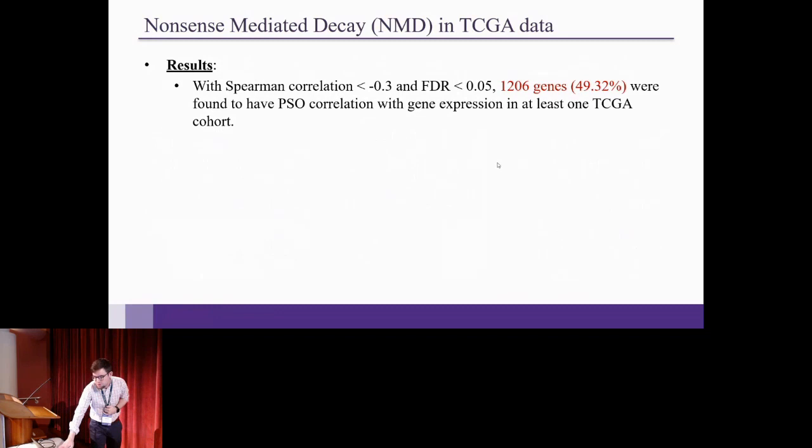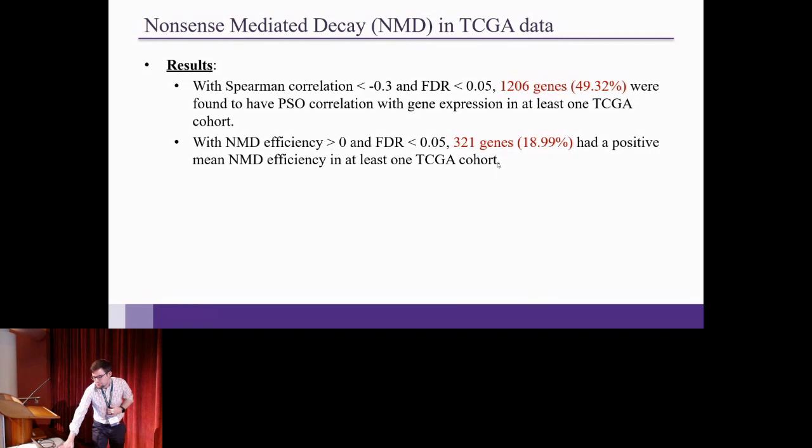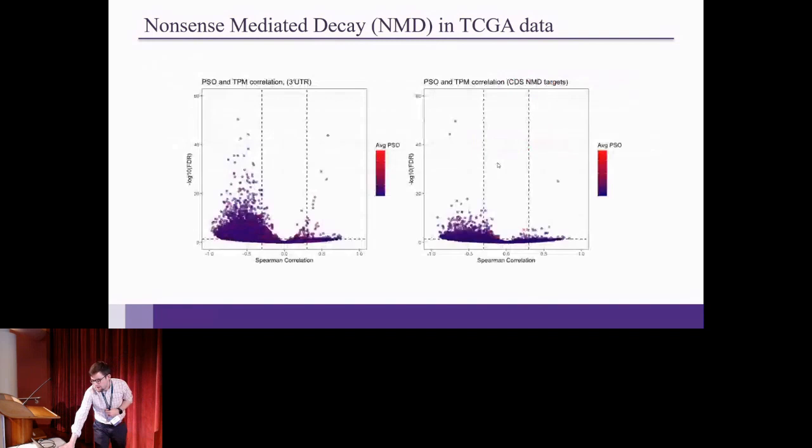So here are some of our results. We found 1,206 genes, and this is 50% of the ones that we were able to test. They were found to have PSO correlations with gene expression in at least one cohort. And with NMD efficiency greater than zero and FDR less than 0.05, we found 321 genes, which is around 18% of the genes we were able to test. Here's a quick volcano plot that shows a lot of the Spearman correlations were in the negative here. And on the right is the CDS NMD targets, the ones that induce a frameshift.